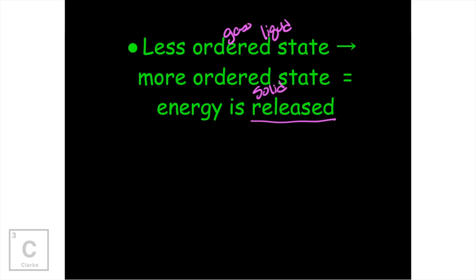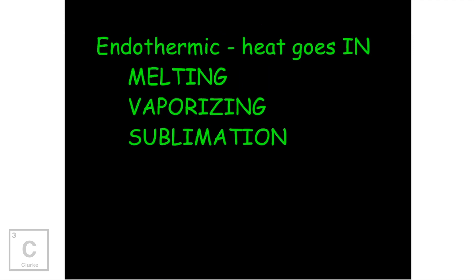Since we're talking about putting heat in and taking heat out, that makes us think of endothermic and exothermic. Endothermic — 'endo' — heat goes in. We're needing to put heat into the system. So melting, if we're taking our ice and melting it to water, you're going to have to add heat. Vaporizing — remember that's just a fancy word for boiling — and to make something boil, you're going to have to add heat. And sublimation: if you're wanting to sublimate something, you're going to have to add heat in.